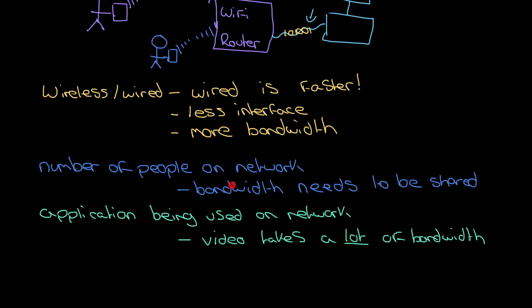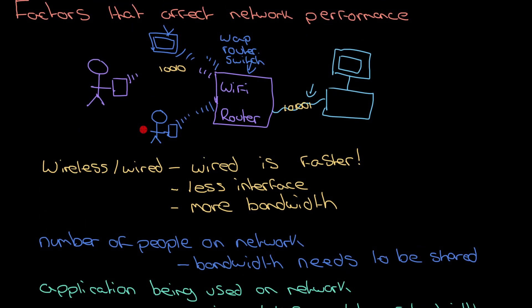Okay, what else? So we've got wired and wireless connections, number of people on the network, what people are doing on the network. The final one that's worth mentioning is just the distance that the data has to travel. Now this does make a difference, but it obviously all sort of comes down to wired and wireless again.